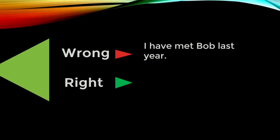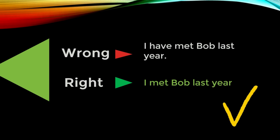You can use an unfinished time like today, this week, this month, and this year. If you need to mention a finished time, then you go back and use the past simple tense. So the correct sentence simply says: 'I met Bob last year.'